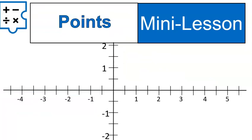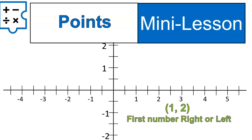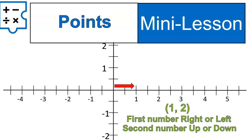Now we're going to plot some points. If you are ever given a set of two numbers with a comma between them, that is called an ordered pair. The first number tells you the right-to-left movement, and the second number tells you the up or down movement. So you start at the origin — in this case we would go one to the right and then two up. That's where we would plot this point. We don't normally draw in those arrows; that was just something to help illustrate.